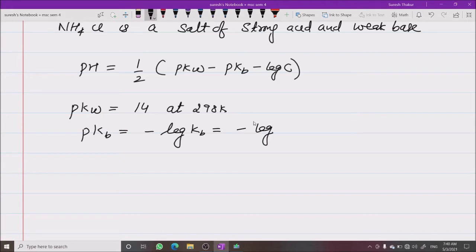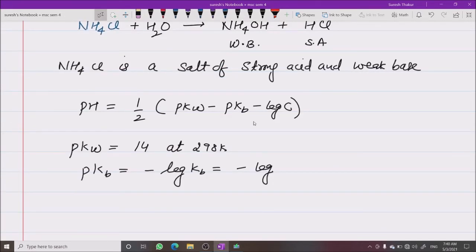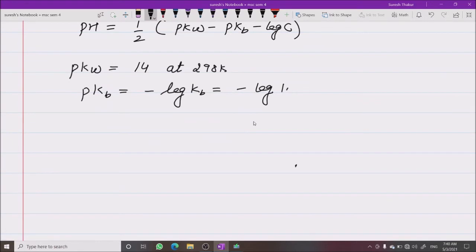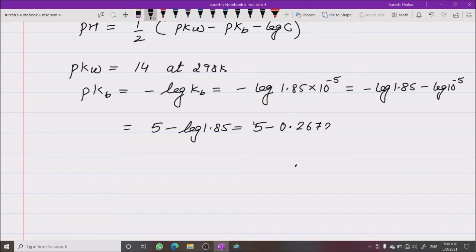Kb is given to us as 1.85 × 10^-5. So pKb is minus log of 1.85 minus log of 10^-5. Minus times minus gives plus, so 5 minus log of 1.85. Log of 1.85 is 0.2672, so the value comes out to be 4.7328.